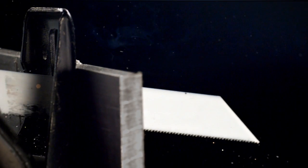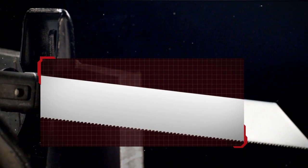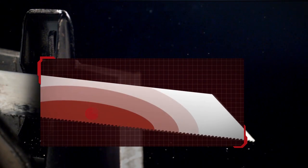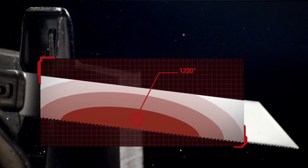On every cut, you're generating the number one killer of blades: heat. In extreme cuts, your blade has to withstand up to 1,200 degrees of heat that can weaken and melt even hardened reciprocating saw teeth.